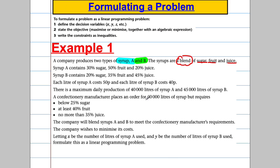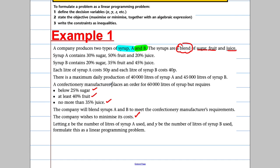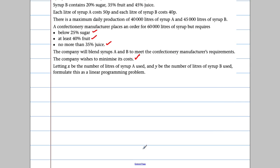A confectioner places an order for 6,000 litres of syrup but requires below 25% sugar, at least 40% fruit, and no more than 35% juice. The company will blend the syrups to meet the manufacturer's requirements and wishes to minimize its costs. We let X be the number of litres of syrup A used and Y the number of litres of syrup B used.